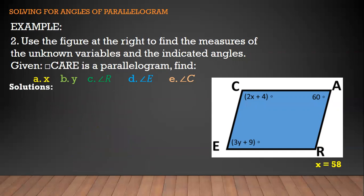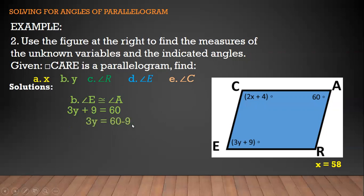Next, find Y. The variable Y is in angle E, and we have 60 degrees for angle A. Applying the property that opposite angles are congruent, angle E is congruent to angle A. Substituting: 3Y + 9 = 60. Transposing: 3Y = 60 − 9 = 51. Dividing both sides by 3: Y = 17.